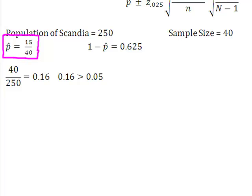Well, the problem told me that I had 15 families who said that they attended church regularly, and that was out of my sample of 40. So I simply take 15 divided by 40, and that gives me P hat.